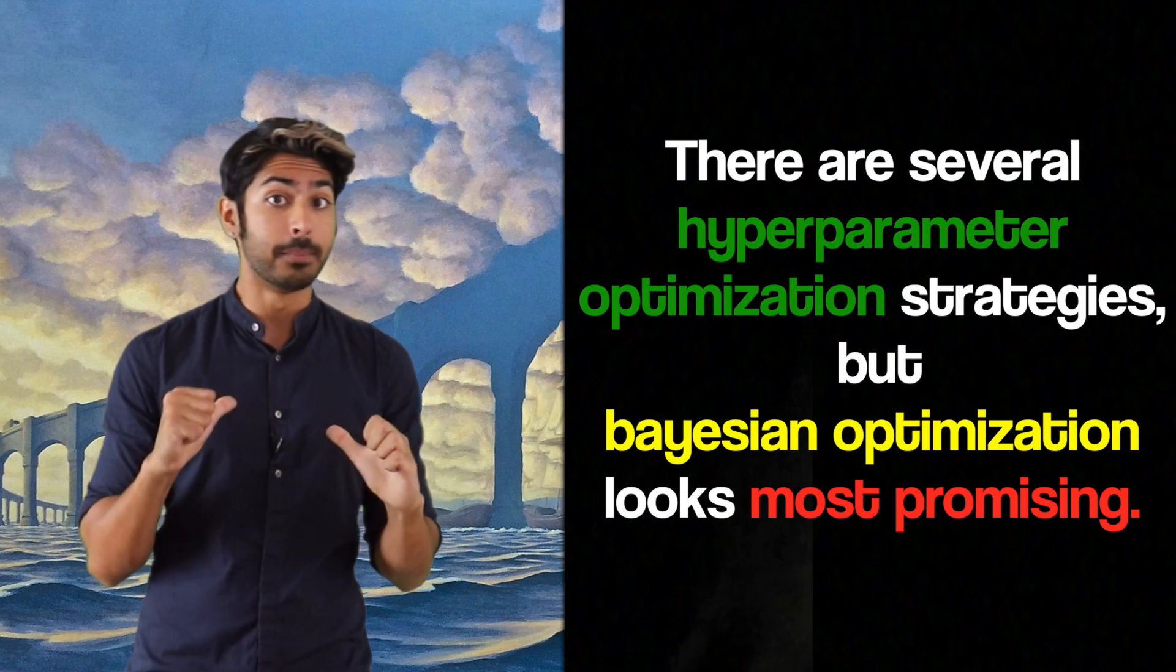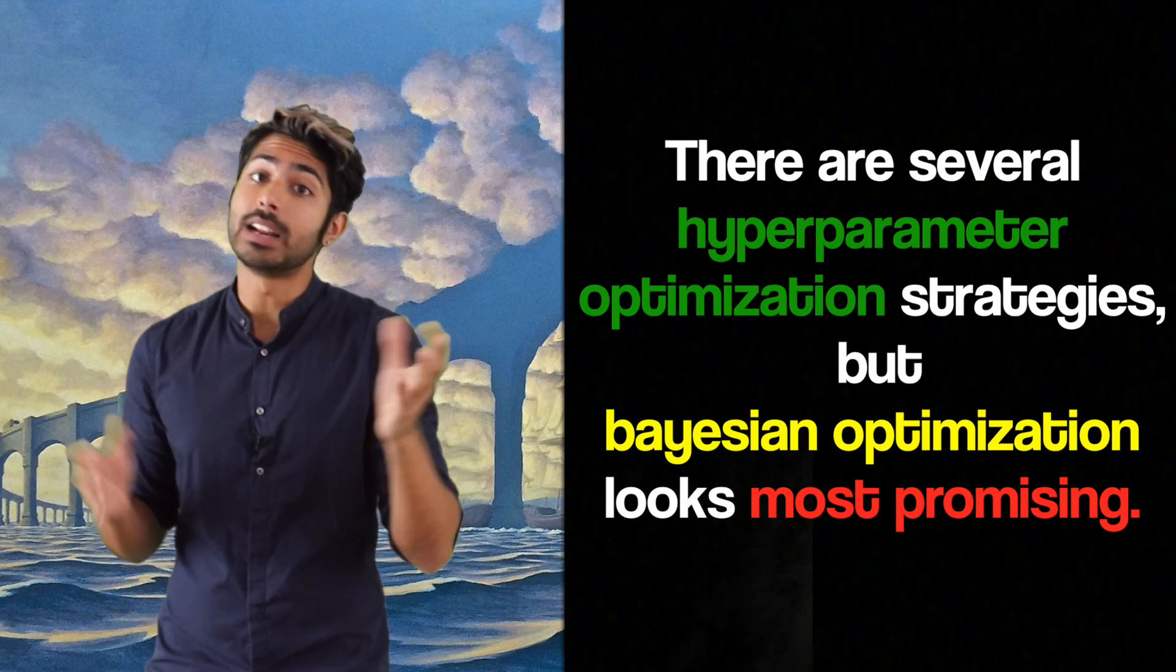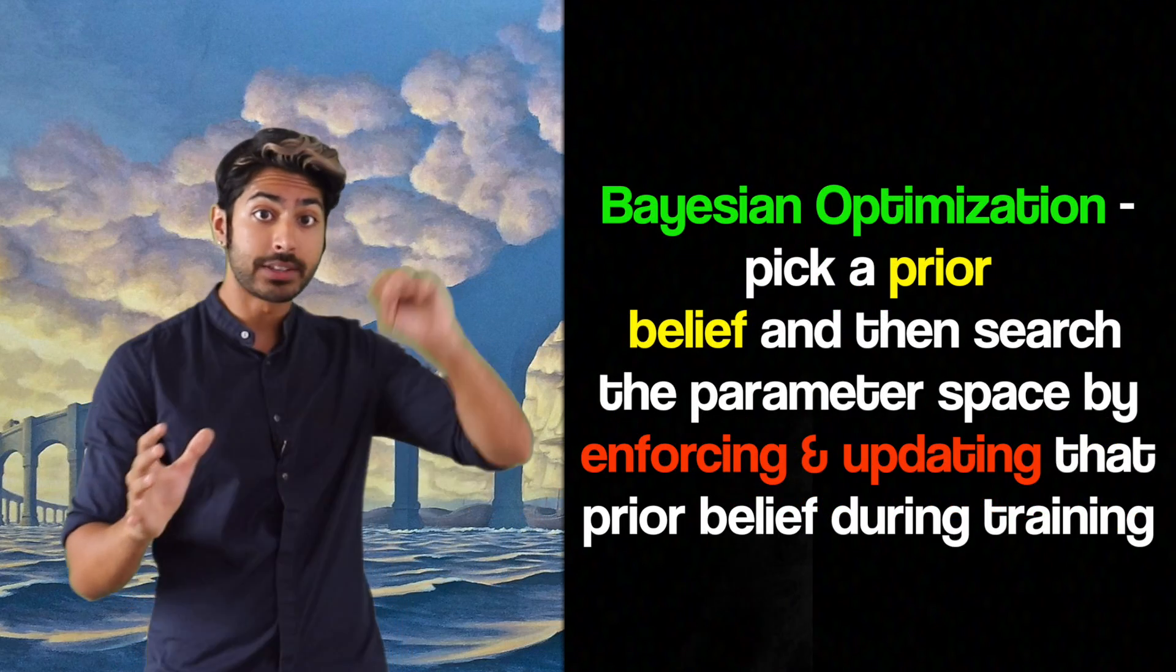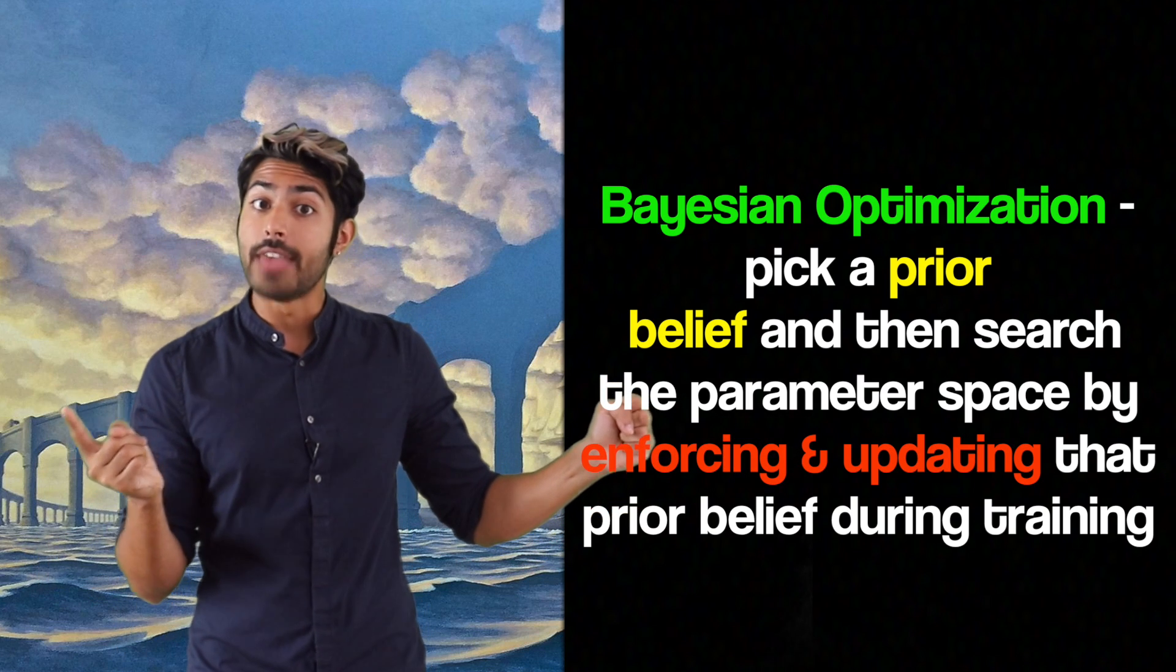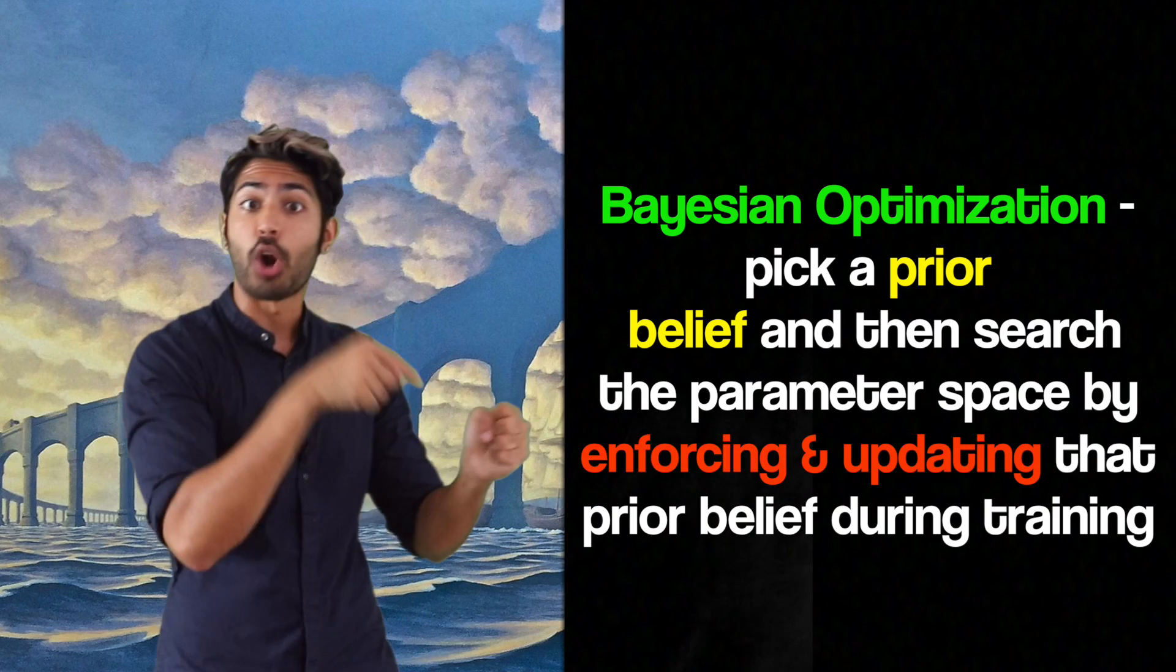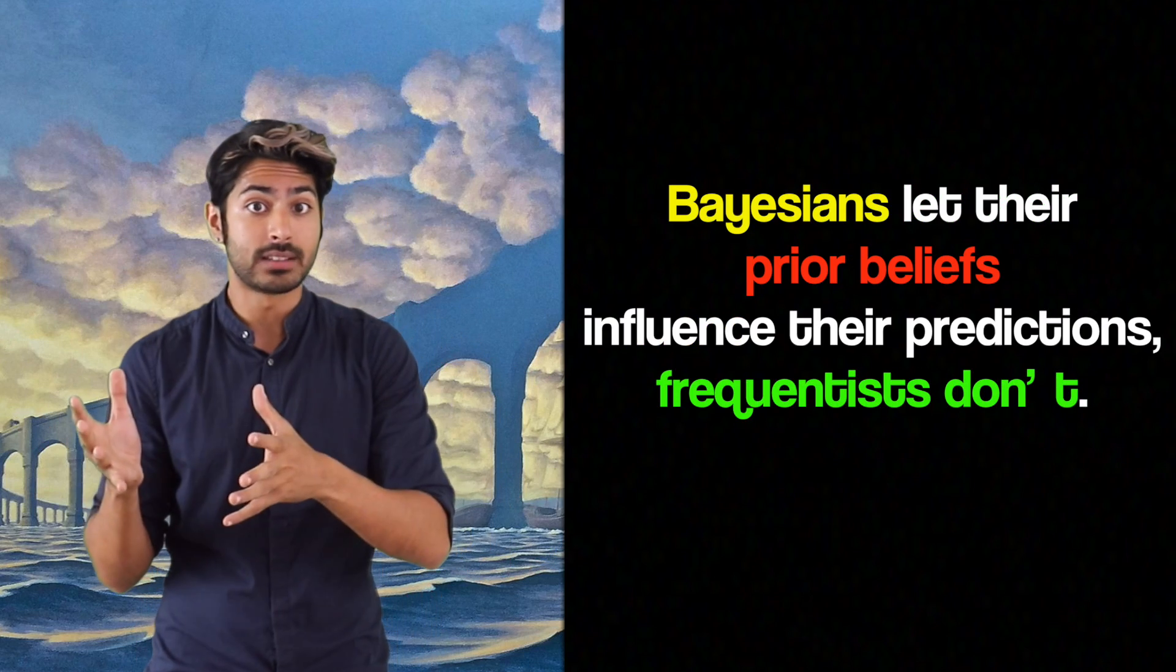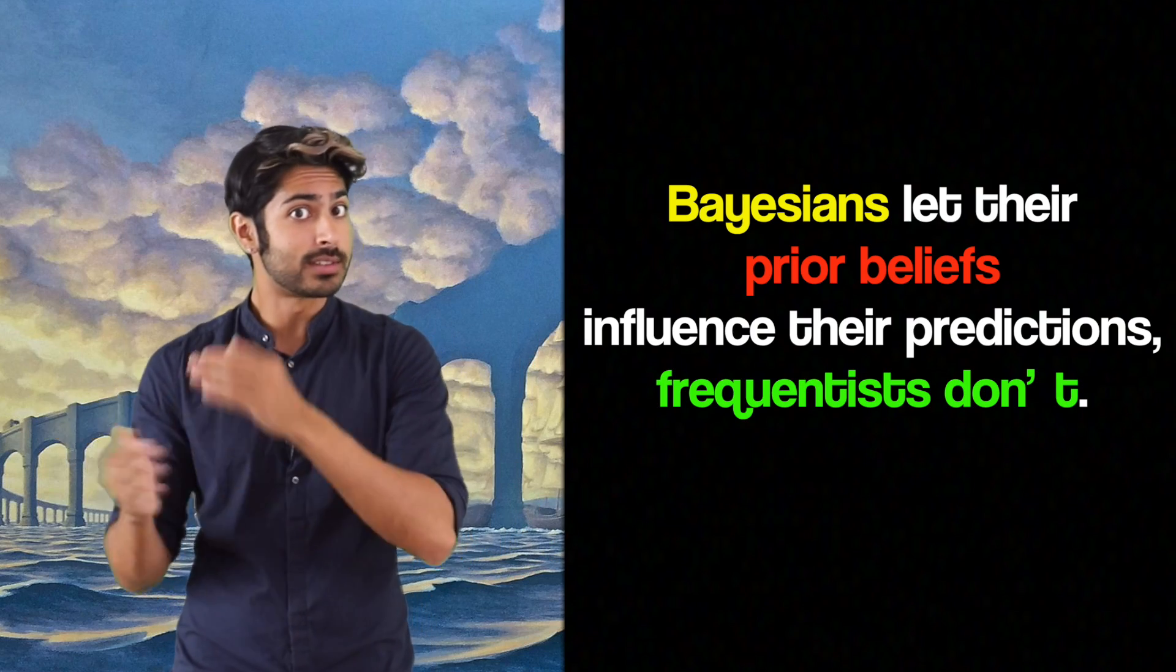To summarize, we can optimize our hyperparameters using several strategies, but Bayesian optimization looks most promising. Bayesian optimization picks a prior belief about how the hyperparameters will behave and then searches the parameter space by enforcing and updating that prior belief based on ongoing measurements. So, Bayesians let their prior beliefs influence their predictions, frequentists don't.